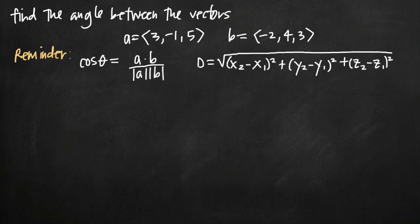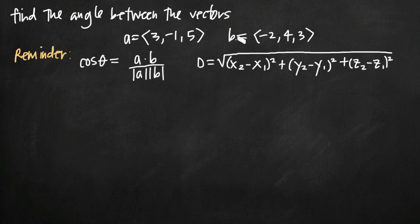Today we're going to be talking about how to find the angle between two vectors. In this particular problem we've been given two vectors, one represented by a and the other represented by b. This notation for vectors tells us that we have a vector that starts at the origin, where the initial point is at the origin, with a terminal point at the coordinate point. And in the case of vector b, we have a vector with initial point at the origin and terminal point at its coordinate.